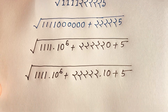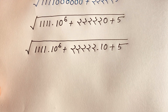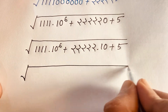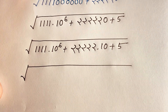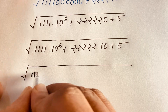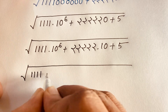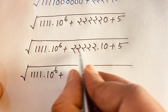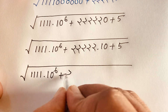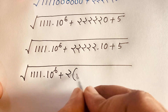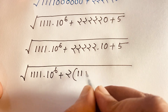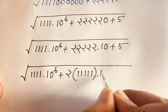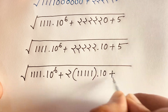Now under the square root, 1111 stays as 1111, times 10 to the power 6, plus — and I can see here is 2 times — here is five ones, that is 11111, times 10 plus 5.